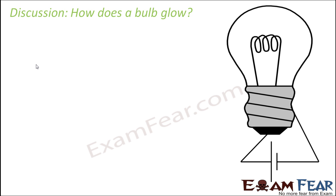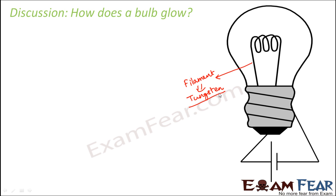So now the question is: what is there inside the bulb which allows it to glow when current passes through it? That is what we are going to discuss here. If you look at the structure of a bulb very closely, you will see a metal filament inside the bulb, and this filament is made up of a metal called tungsten. Tungsten is a metal which has a very high melting point.